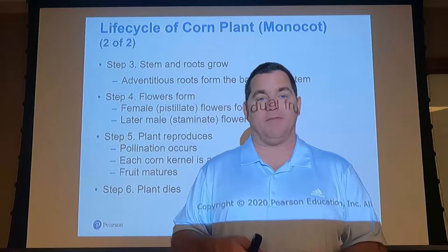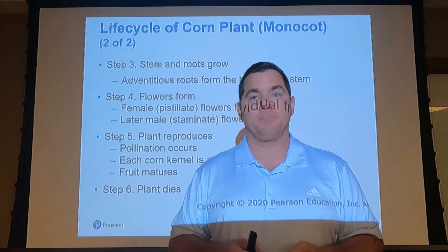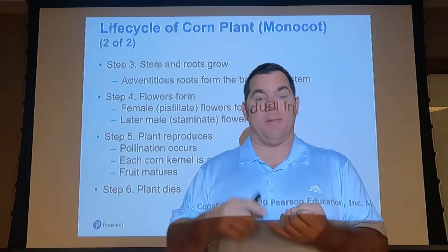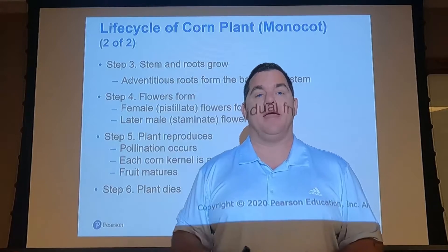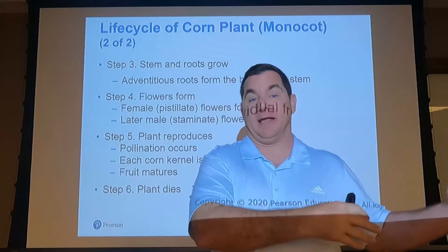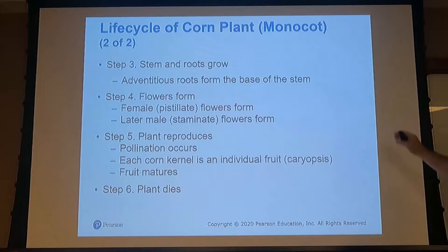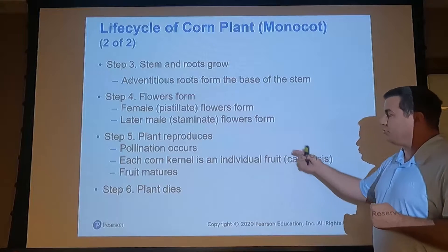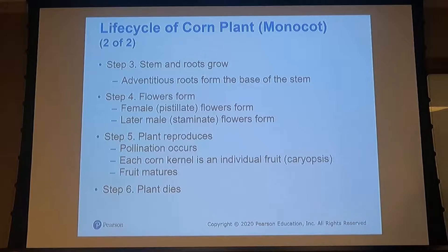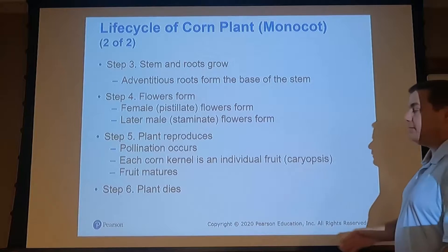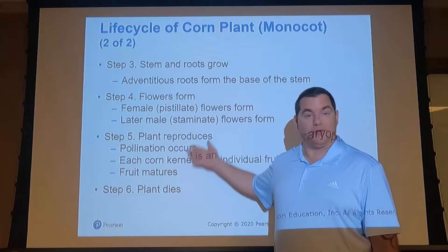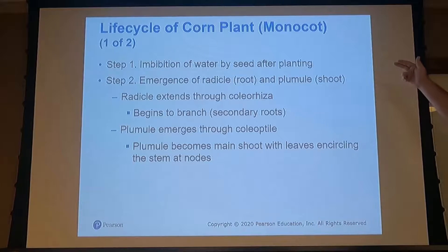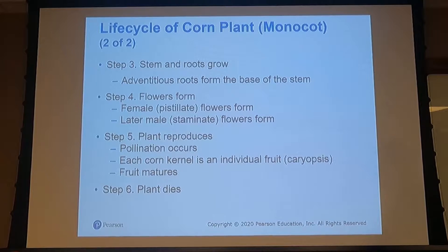Depending on the plant type, you might have both male and female flower parts in the same flower, male and female parts at separate places on the same plant, or entirely separate male and female plants. Next, the plant reproduces: pollination comes from the tassel, forming a fruit — each corn kernel — and finally the fruit matures and the plant dies. Corn, being an annual: imbibe water, produce radicle, grow roots and shoots, form flowers, reproduce, die.